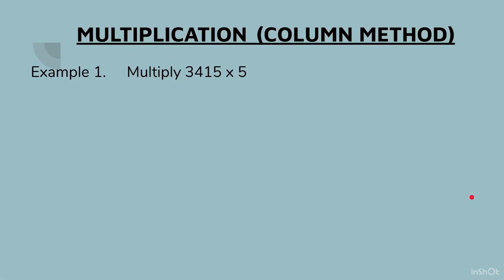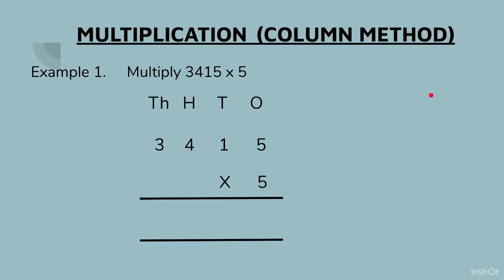Let us start with an example: multiply 3415 by 5. We will write the place values, write the number below, put the multiplication sign and write 5. We will start with the ones column and multiply 5 by the first digit on the right — 5 fives are 25. We will write the 2 on top and 5 at the bottom.